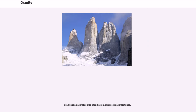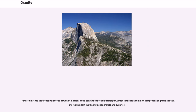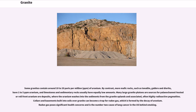Granite is a natural source of radiation, like most natural stones. Potassium-40 is a radioactive isotope of weak emission, and a constituent of alkali feldspar, which in turn is a common component of granitic rocks, more abundant in alkali feldspar granite and syenite. Some granites contain around 10 to 20 parts per million (ppm) of uranium. By contrast, more mafic rocks, such as tonalite, gabbro and diorite, have 1 to 5 parts per million uranium, and limestones and sedimentary rocks usually have equally low amounts.